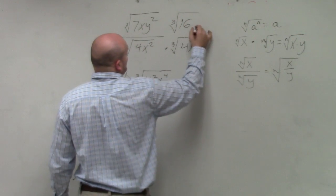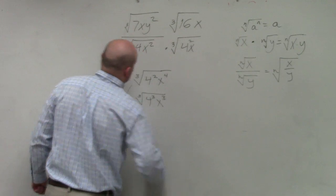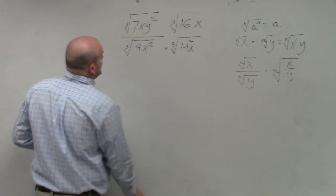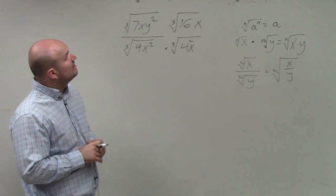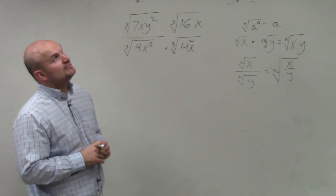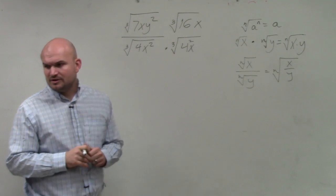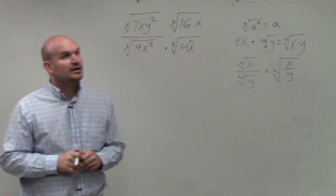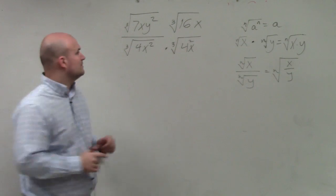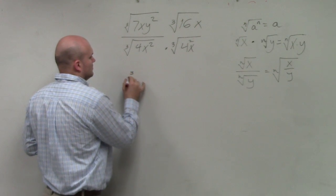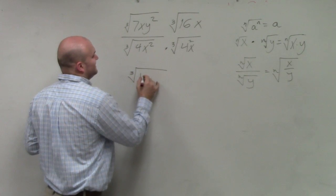So 4 squared is really 16. All right, 16 times 7 - that would be 42, so it would be 112. 112x cubed over 4x.